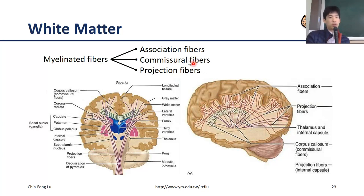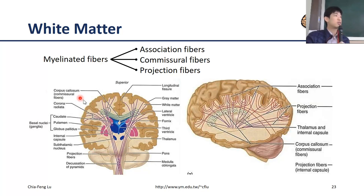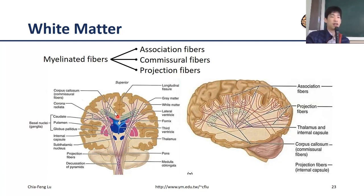For the commissural fibers, they connect the two brain hemispheres. The most important commissural fiber is called the corpus callosum. Corpus callosum is the largest neural fiber structure in your brain — it contains over 300 million axons, and it definitely runs in the left-right direction connecting the two hemispheres.